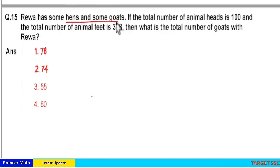Riva has some hens and some goats. If the total number of animal heads is 100 and the total number of animal feet is 348, then what is the total number of goats with Riva?